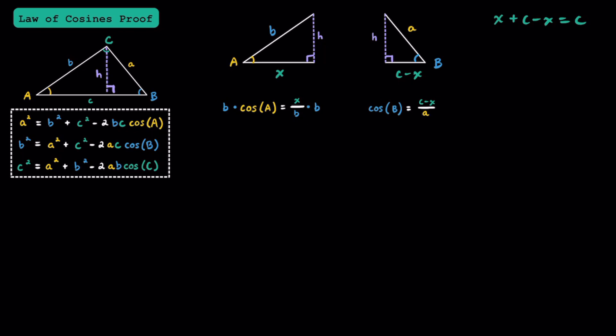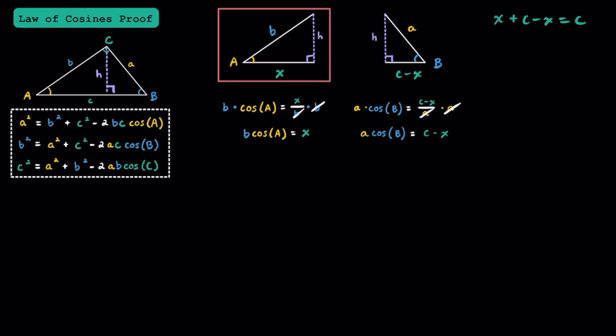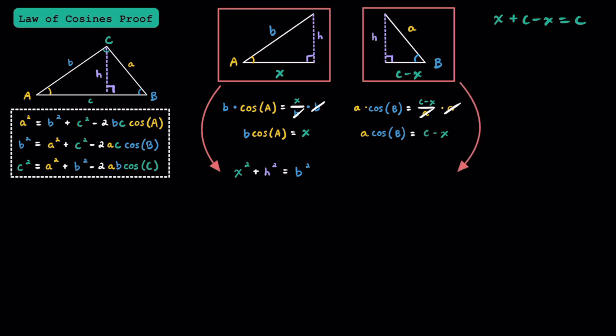And for the triangle on the right, cosine of angle B equals (c minus x) over a. For the equation on the left, we multiply both sides by b to get b times cosine of angle A equals x. And for the equation on the right, we multiply both sides by a to get a times cosine of angle B equals c minus x. For the triangle on the left, let's write an equation using the Pythagorean theorem: x squared plus h squared equals b squared. Now for the triangle on the right: the quantity (c minus x) squared plus h squared equals a squared.